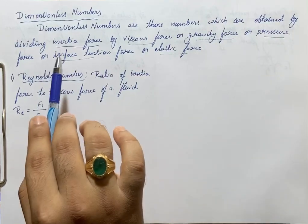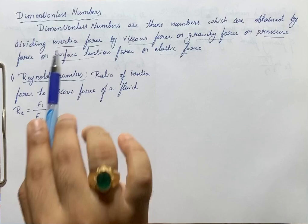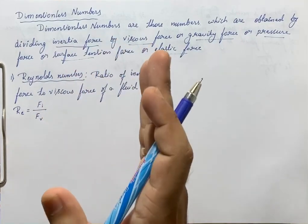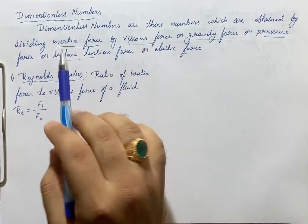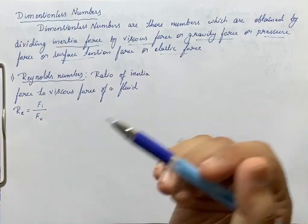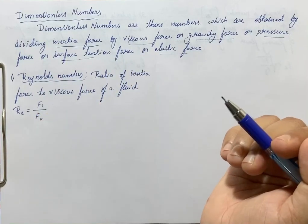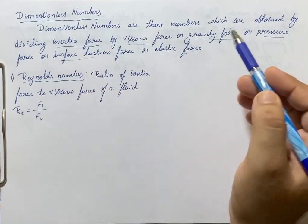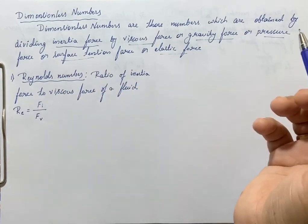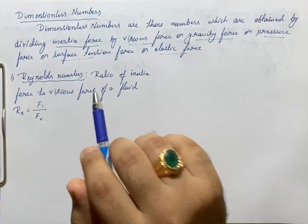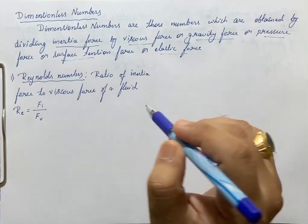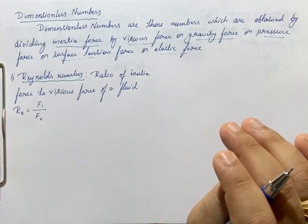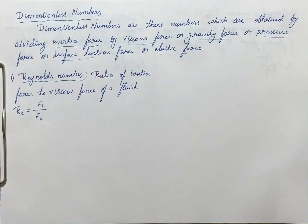That means we divide the inertia force by other types of force. Inertia force divided by viscous force gives us Reynolds number. Similarly, inertia force by gravity force, inertia force by pressure force, inertia force by surface tension force, and inertia force by elastic force will each give us a different dimensionless number.